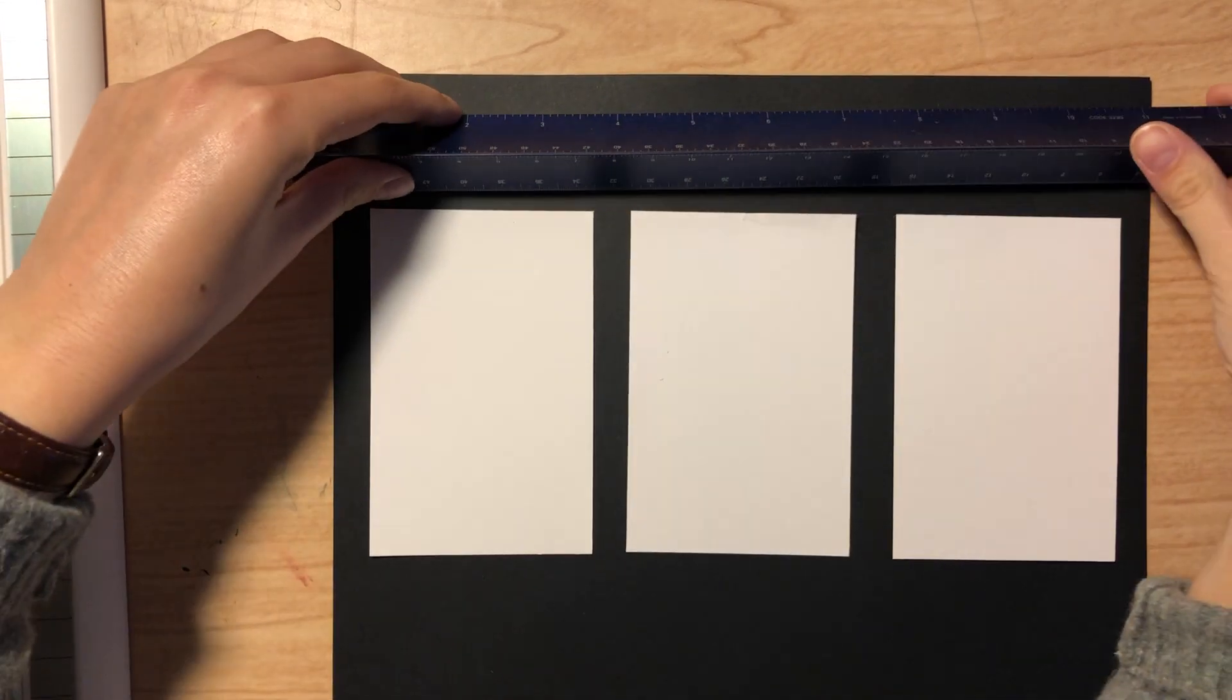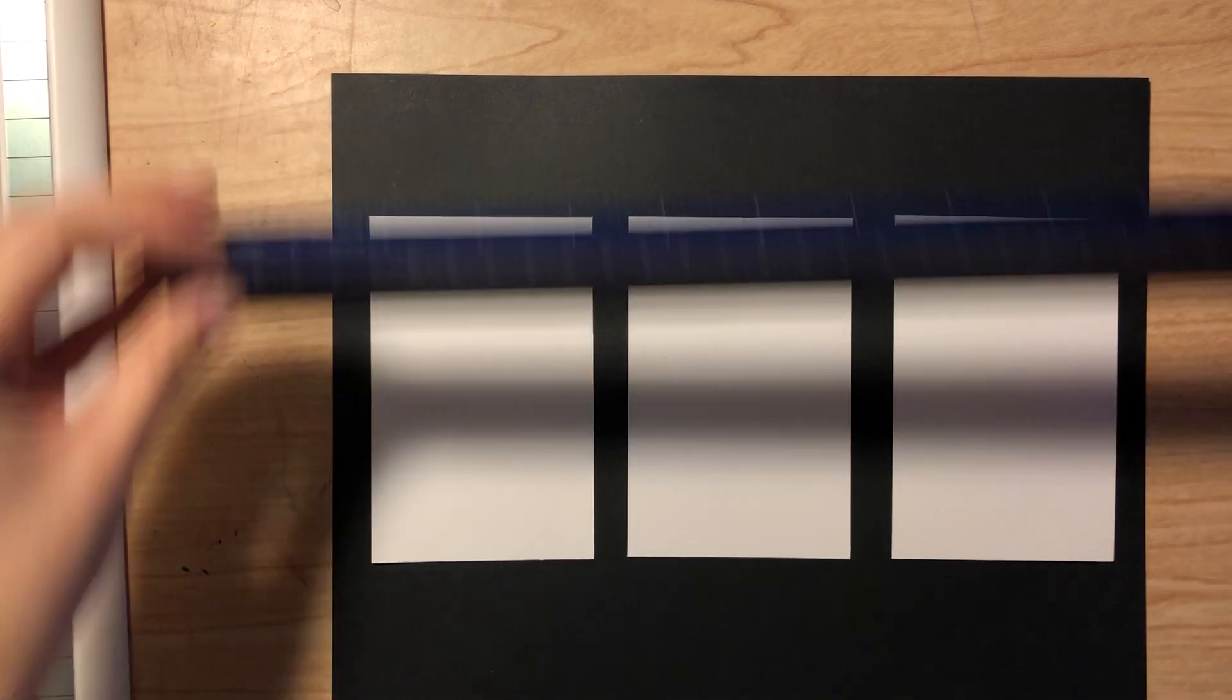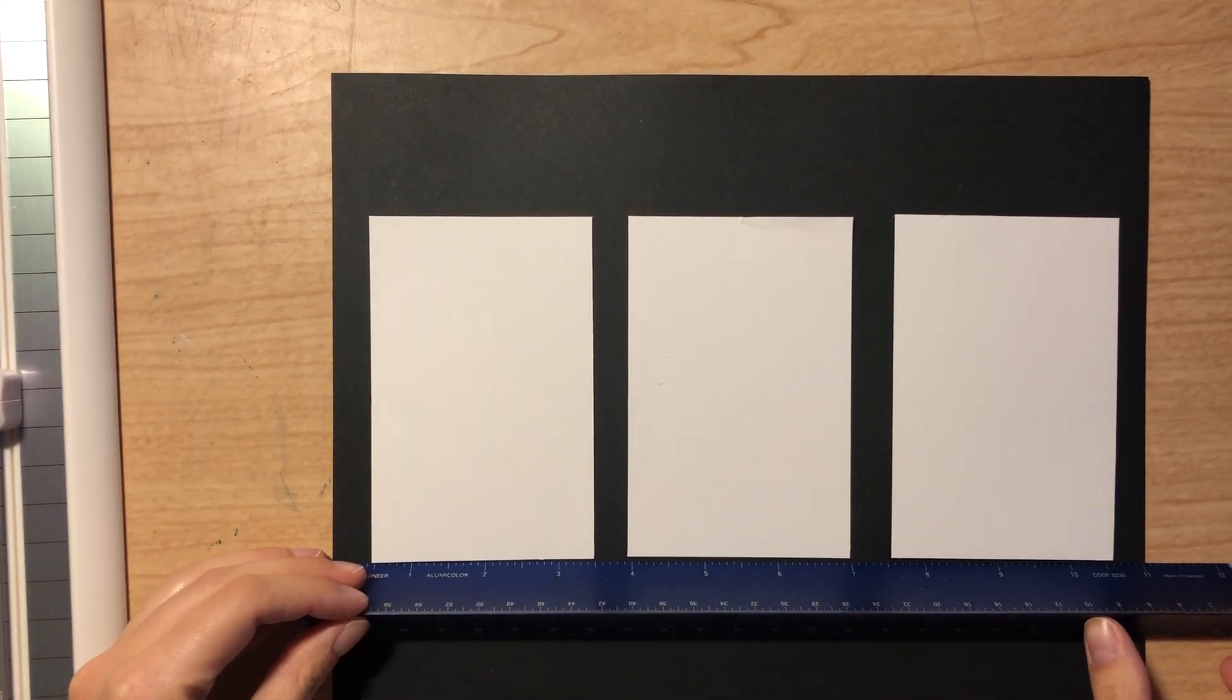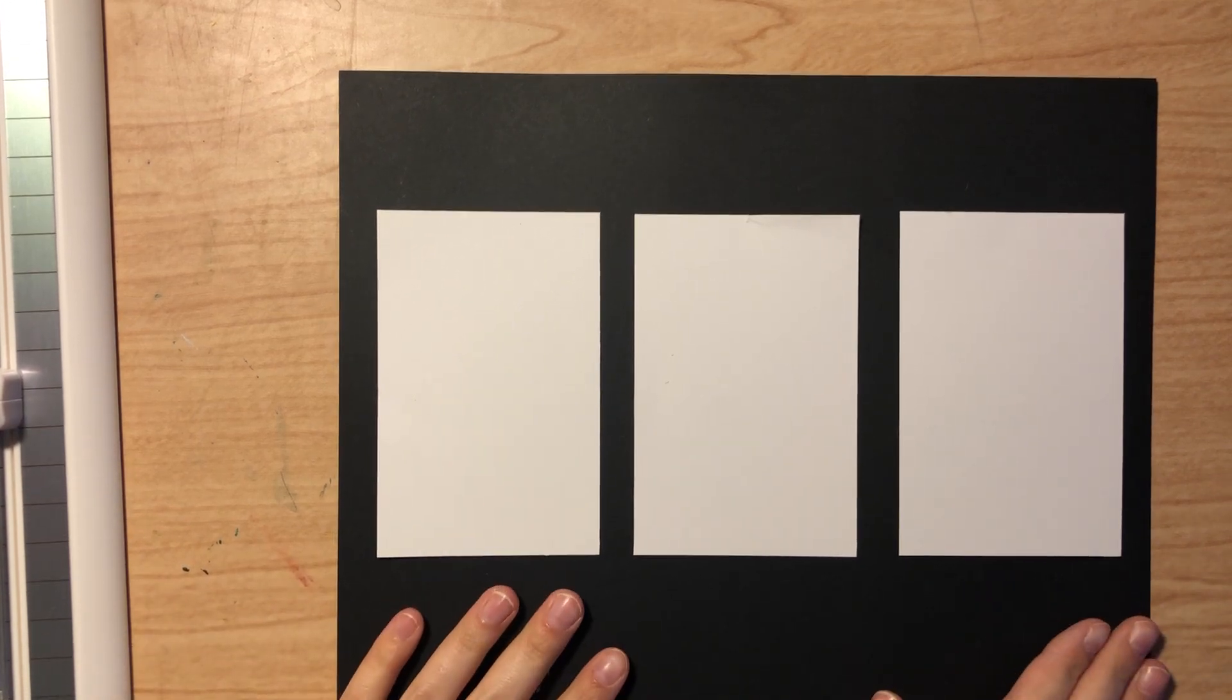So I'm going to line them up, make sure that they're level. If you need to, you can use a ruler to make sure that they're all level with each other, just kind of push them together like this. It doesn't need to be super level right now because I just want to make sure that this is how I want it.